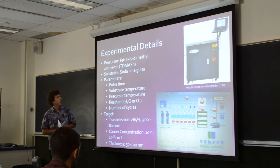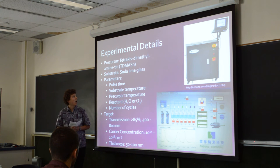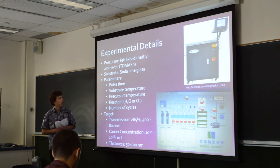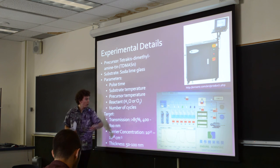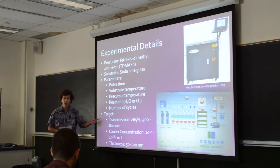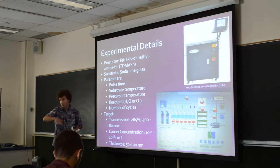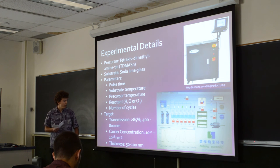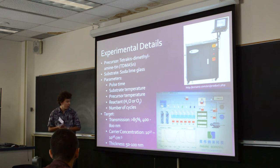We're using tetrakis(dimethylamino)tin as a precursor and depositing on top of soda lime glass. The parameters we can change are the pulse time, the substrate temperature, the precursor temperature, and which reactant we're using — whether we oxidize with water or ozone — and the number of cycles to control the thickness. The target is high transmission, since we don't want our buffer layer to absorb light. We want high transmission in the 400 to 800 nanometer range, a carrier concentration between 10¹⁷ and 10¹⁸ per cubic centimeter, and a thickness of 50 to 100 nanometers.